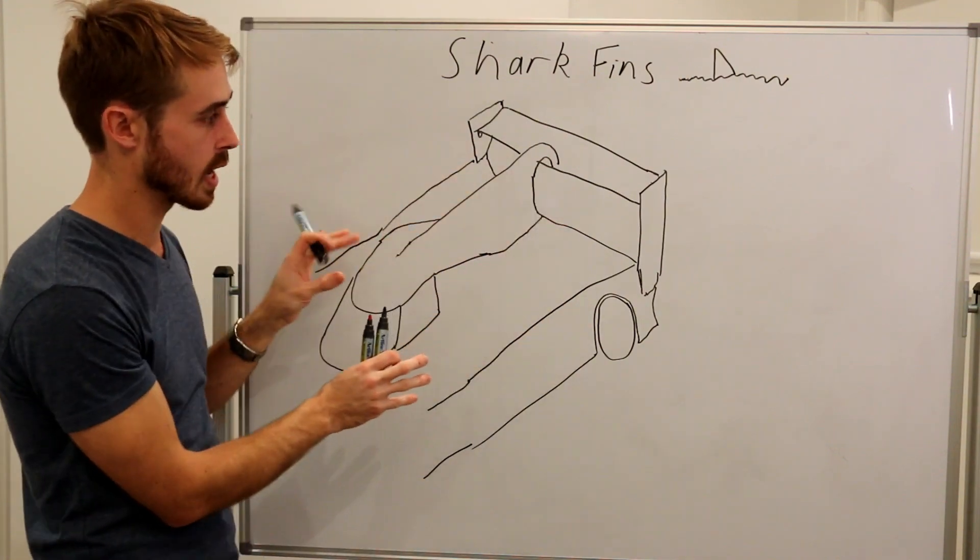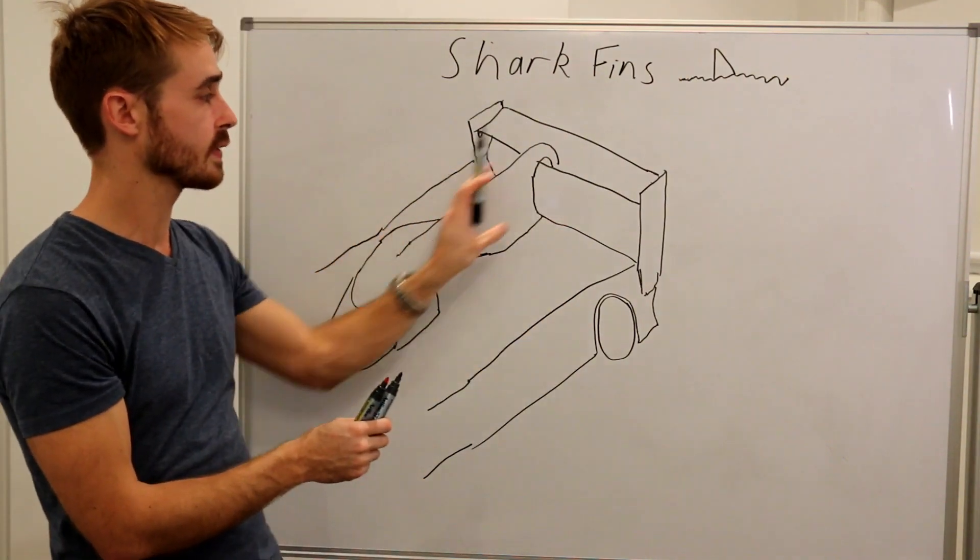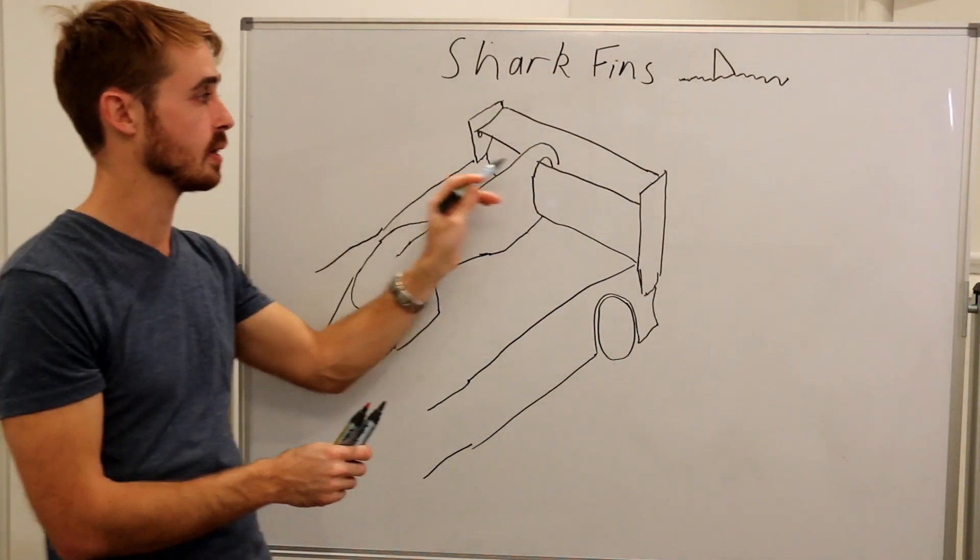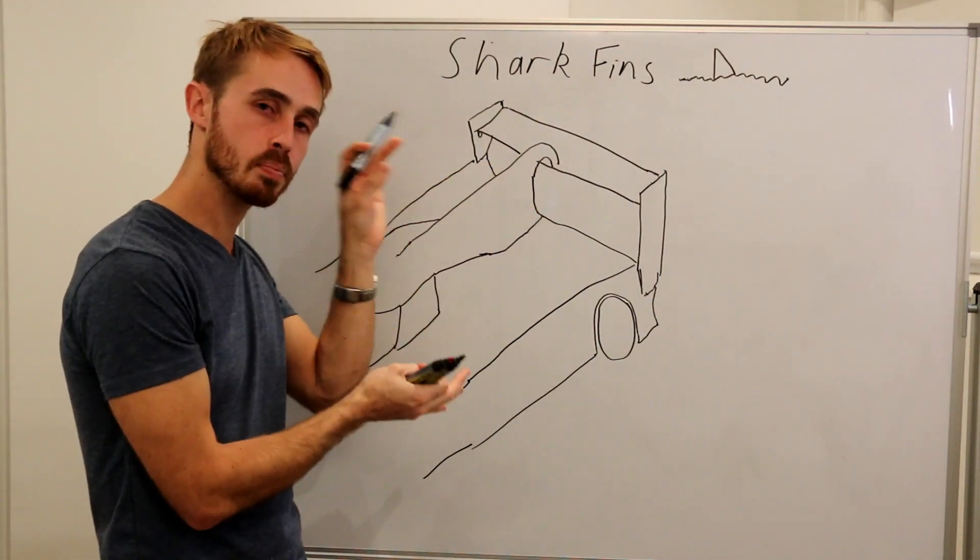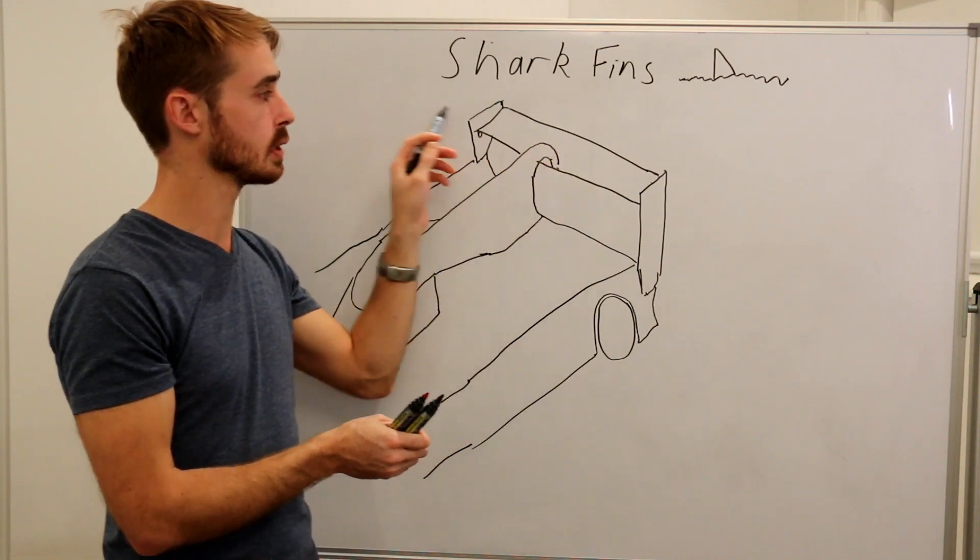From my basic diagram of an LMP1 car, we can see that the shark fin basically runs along the centre of the cabin, goes through, is a big plate that then bolts to the middle of the wing.